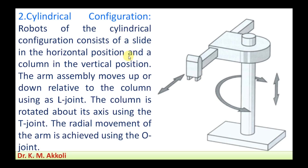The next one is the cylindrical configuration. The robot of cylindrical configuration consists of a slide in the horizontal position and a column in the vertical portion.